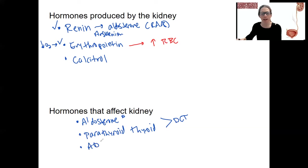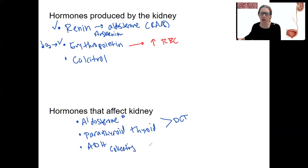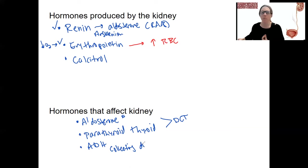Antidiuretic hormone — ADH or vasopressin — acts on the collecting duct to insert aquaporins for water reabsorption, and therefore regulates urine output. More ADH is going to decrease urine output. In some cases we might want to produce less ADH.